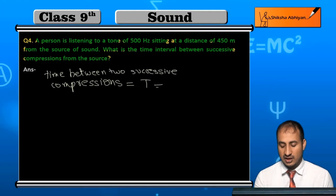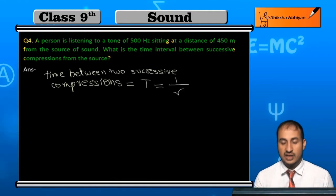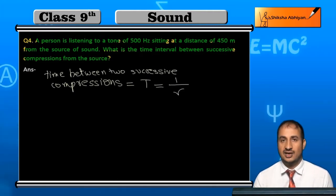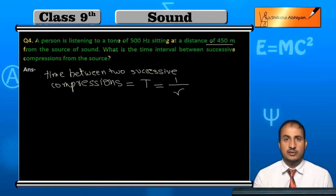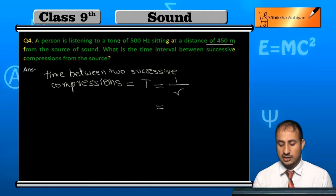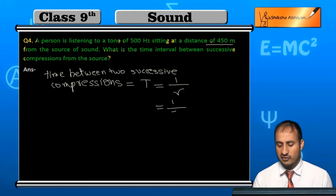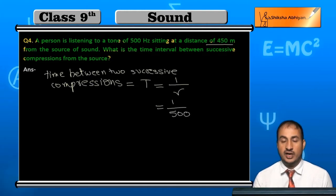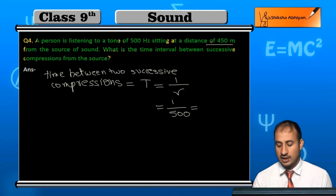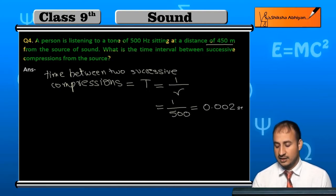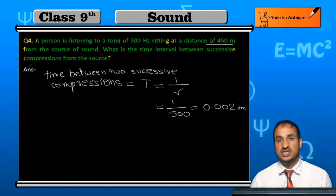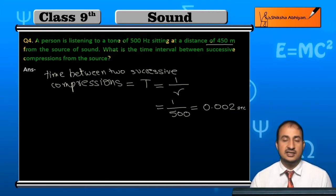और time period क्या होता है? यहाँ पर distance का use नहीं होगा, क्योंकि वो frequency से जाएगा. तो frequency यहाँ पर कितनी होगी? वो है 500 hertz. और one upon 500 कितना होता है? 0.002 second. तो 0.002 second का time होगा.